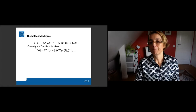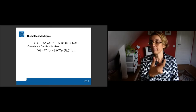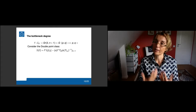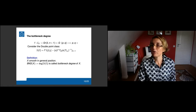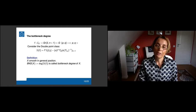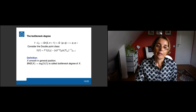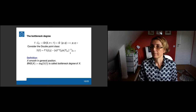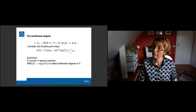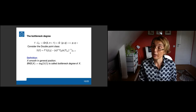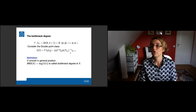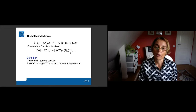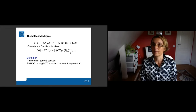We define the bottleneck degree of X as the degree of this double point class. Of course, this double point class does not have to be finite — it might contain more than just bottleneck points. But for smooth projective varieties in general position, it is a well-defined concept. That is what we call the bottleneck degree of X.